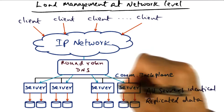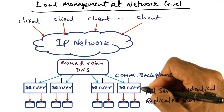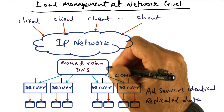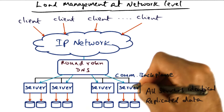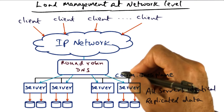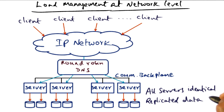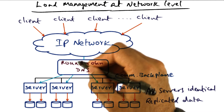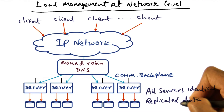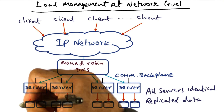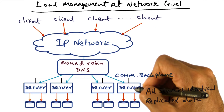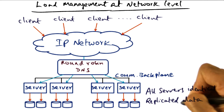The round robin DNS server assigns different IP addresses, corresponding to different servers, to the incoming client requests. That way, clients are being redirected to different servers. Because the load manager is doing this at the level of individual server addresses, you get very good load balance. The inherent assumption in this model is that all the servers are identical, so an incoming request can be sent to any one of them. The model also assumes that data is fully replicated.